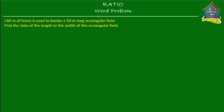Welcome to homecampus.com.sg. Here's a word problem: 160 meters of fence is used to border a 50-meter long rectangular field. Find the ratio of the length to the width of this rectangular field.